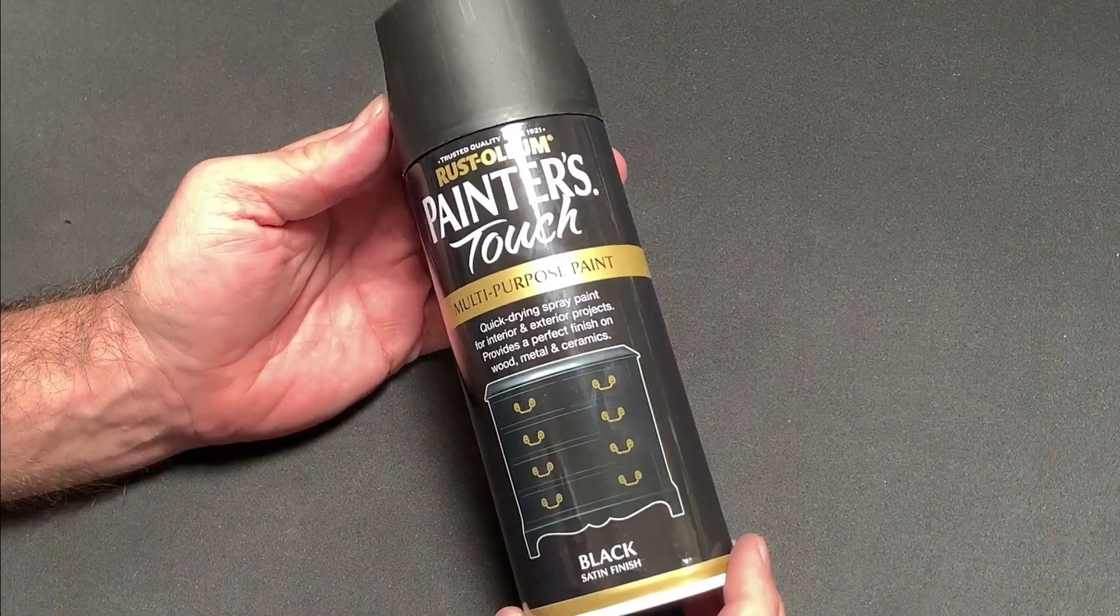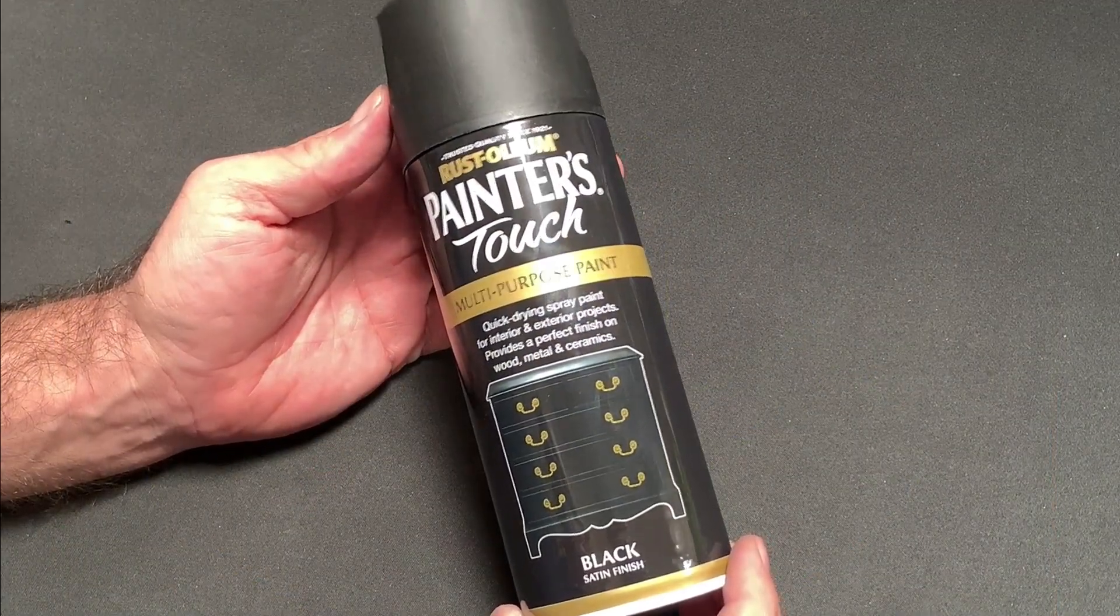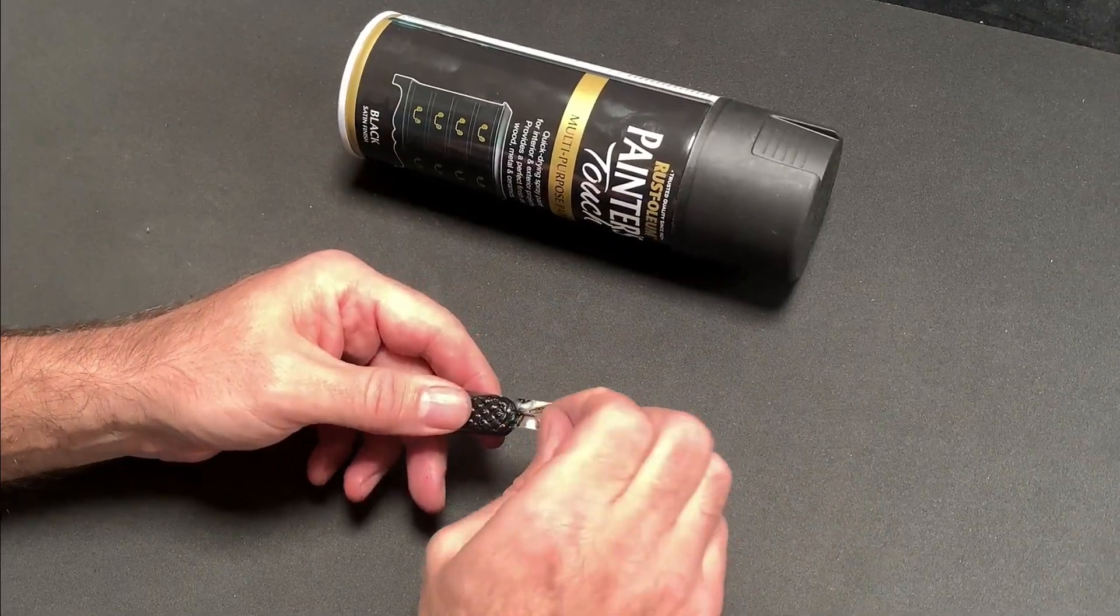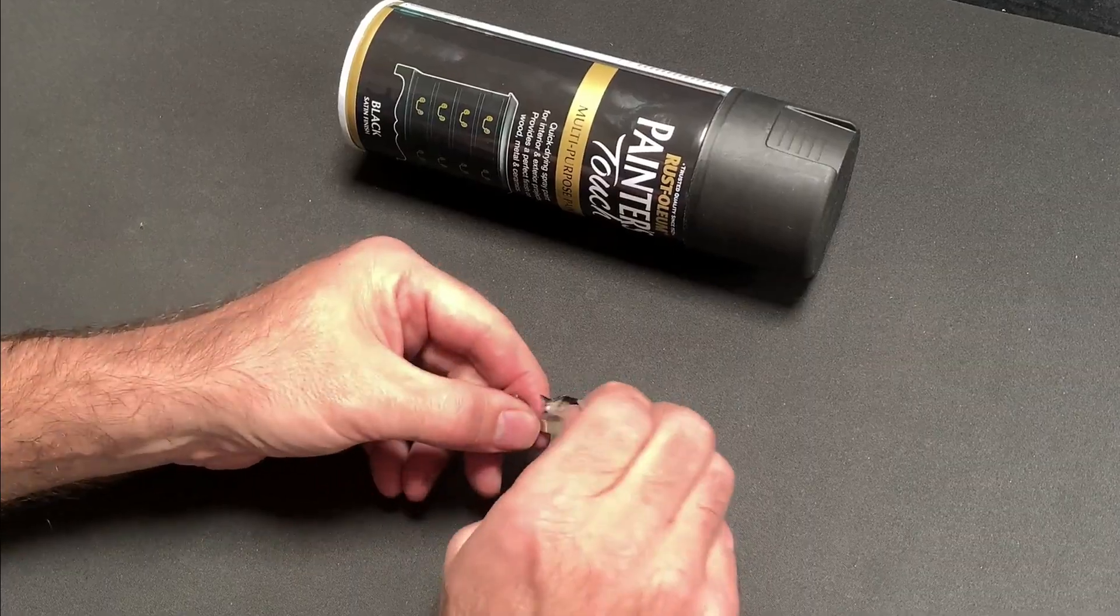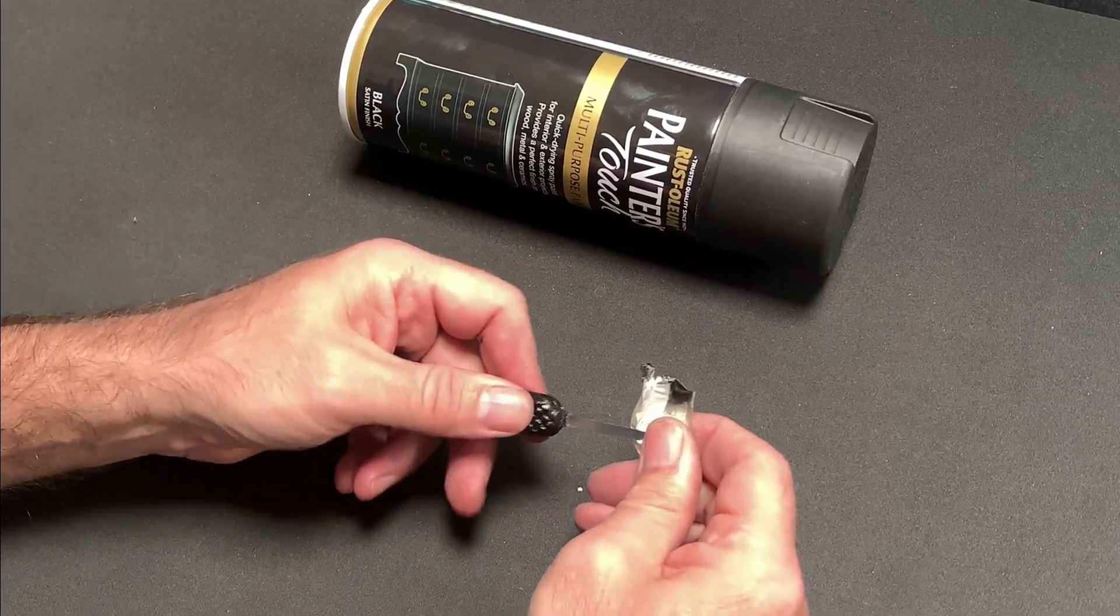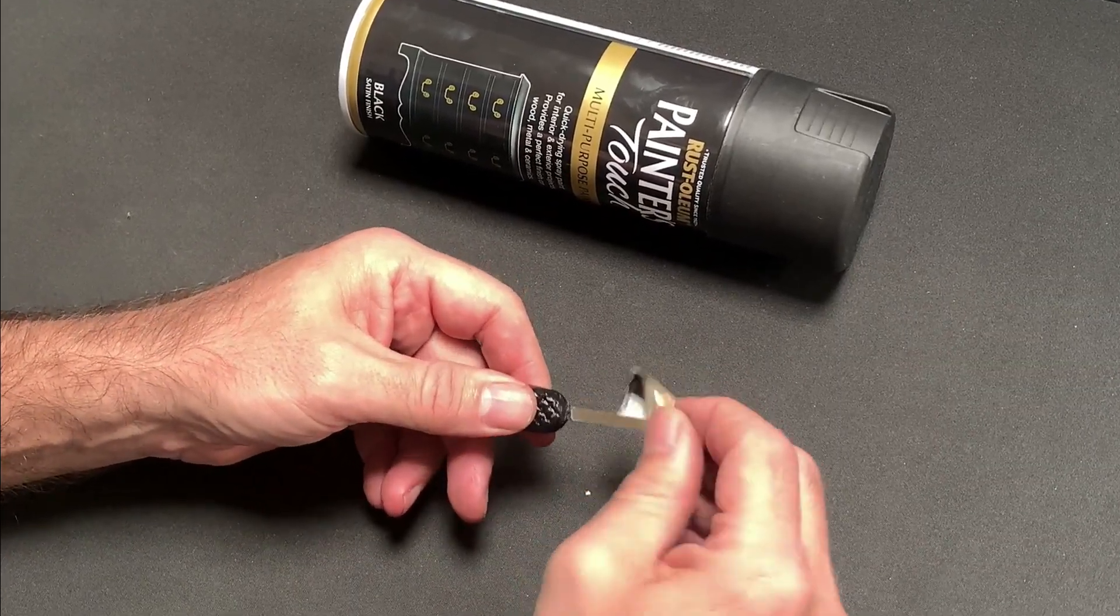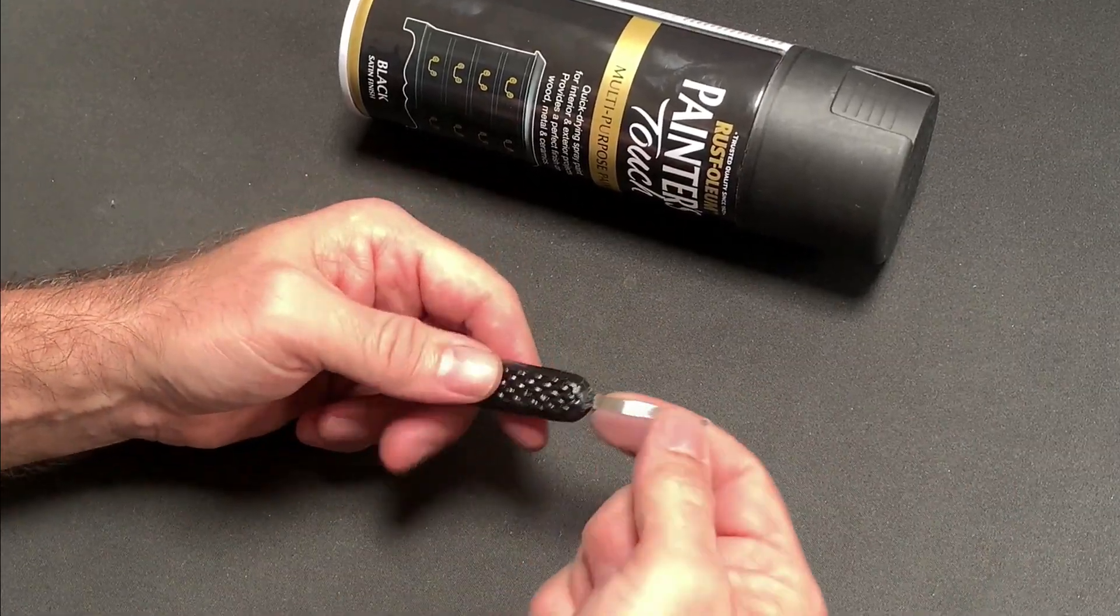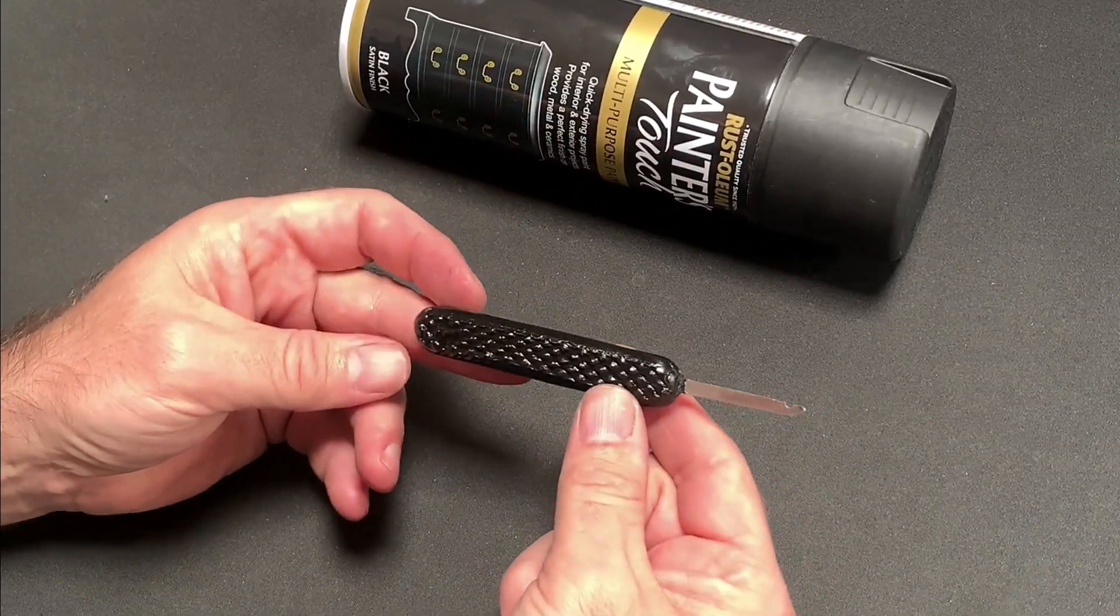Finally I took a satin finish black spray paint and having taped up the blade of the tool I gave it a light coating to create an even finish. The result is a solid tool that feels good in the hand. On reflection it's a little thicker than it needs to be and so I'd fill less of the mold next time or sand the scales a little more for a more slimline grip.